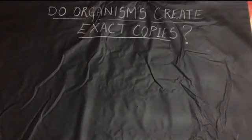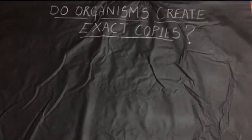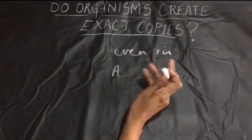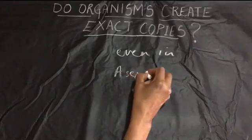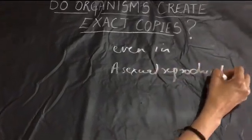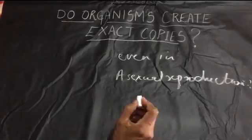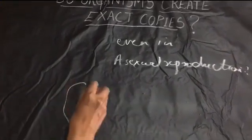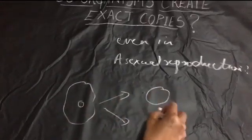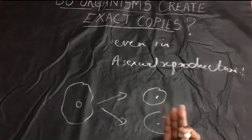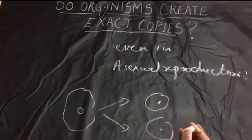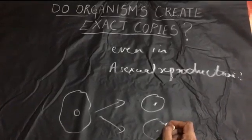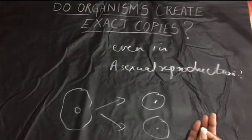Good morning children. Today we are going to learn the topic: do organisms create exact copies even in asexual reproduction? Till now you have learned yes, but organisms do not create exact copies even in asexual reproduction. For example, the parental amoeba cell after binary fission produces two daughter amoeba — they look physically similar but in the DNA, genetically, they are slightly different. Today we are going to learn the reason for that.